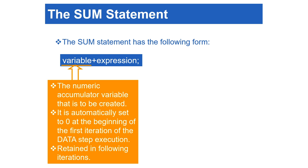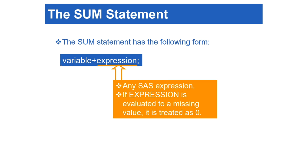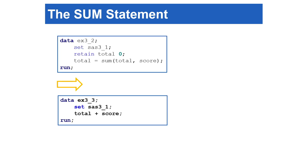The sum statement is very similar to the retain statement. In the sum statement, the variable is the numeric accumulator variable to be created. It is automatically set to zero at the beginning of the first iteration and is retained in the following iterations. The expression after the plus operator can be any SAS expression. In the situation where the expression evaluates to a missing value, it is treated as zero. Therefore, the previous program can be rewritten using the sum statement instead of the retain statement. By using the sum statement, total is initialized to zero at the beginning of the Datastep execution and retains its value at every iteration.